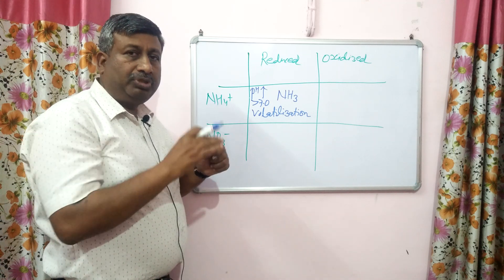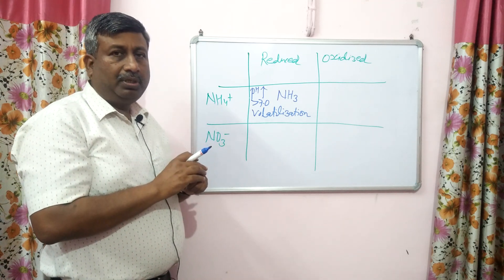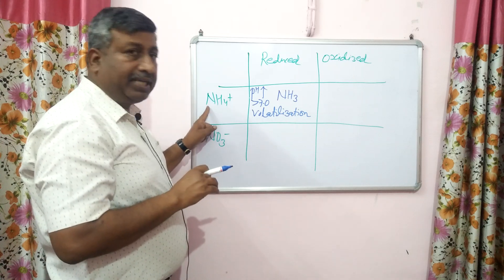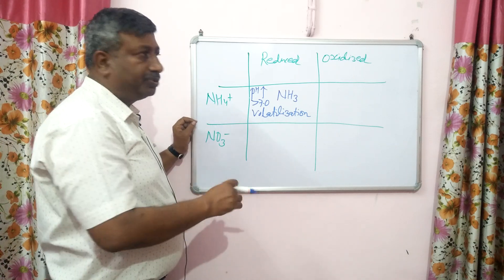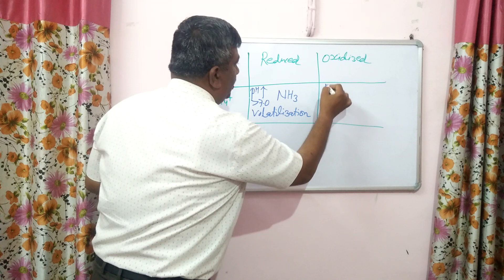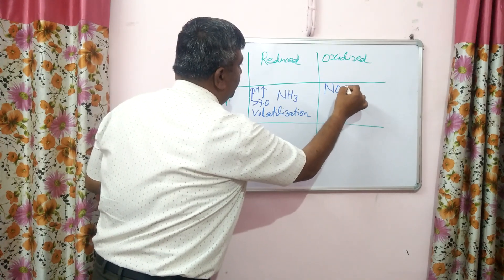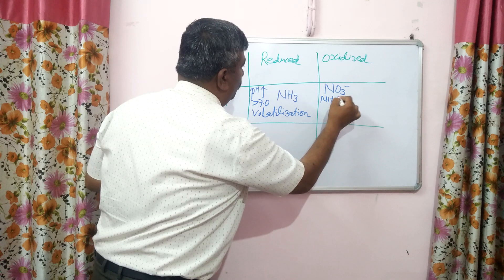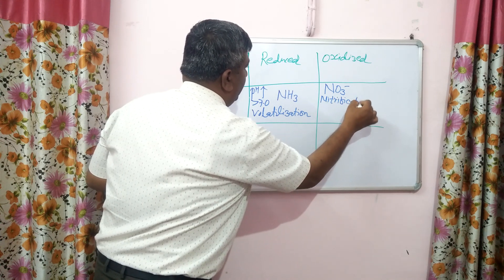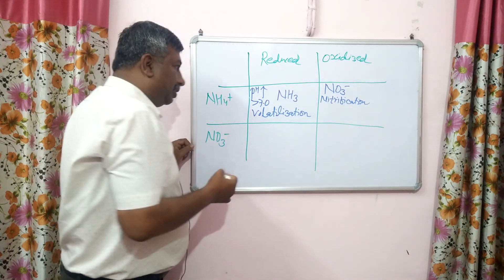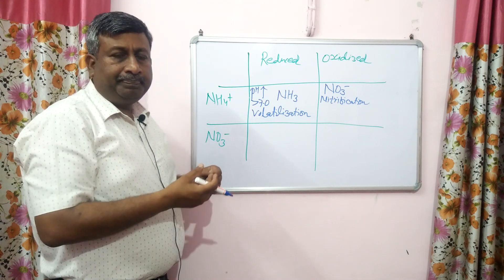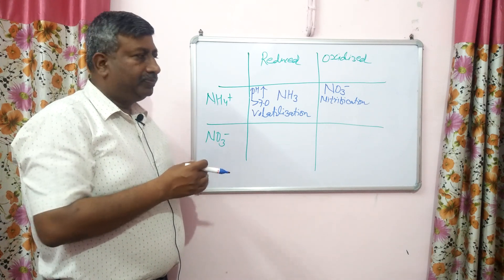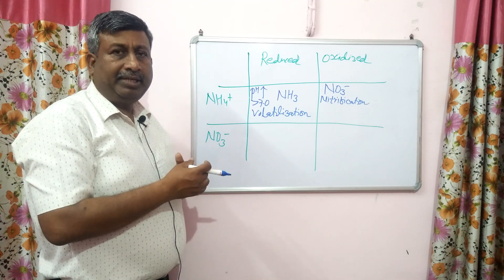Suppose the situation is not reduced but only oxidized. Under oxidized condition, nitrification process takes place and nitrate ion formation occurs. There is no problem in this nitrification process itself, and nitrates are absorbed by the plant. Most of the time, oxidized condition prevails, so ammonium converts into nitrate — that is why plants prefer nitrate.